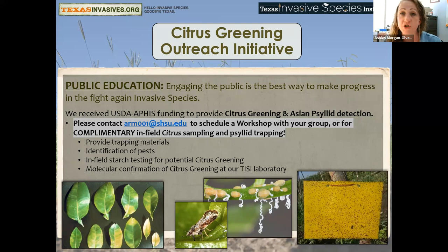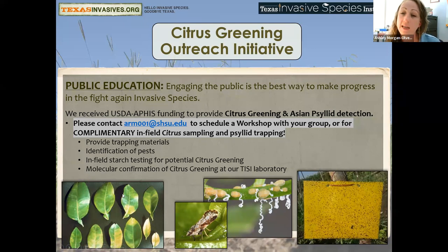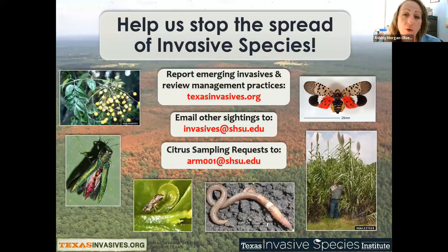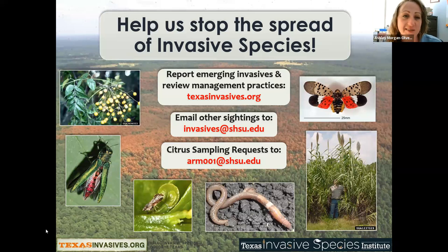Our citrus greening outreach initiative: several counties in Texas are under quarantine because of the Asian citrus psyllid. This psyllid does not fly — it is directly related to humans moving citrus plants, which is why there are quarantines. We've received funding from USDA APHIS to provide workshops on citrus diseases. If you have a group that wants to know more about invasive citrus pests and diseases, email me at arm001@shsu.edu to schedule. We can also provide complementary in-field citrus sampling and psyllid trapping to test your trees for citrus greening. You can report emerging invasives at texasinvasives.org and email other sightings to invasives@shsu.edu.